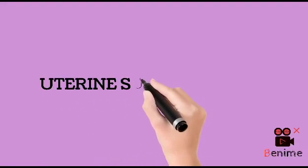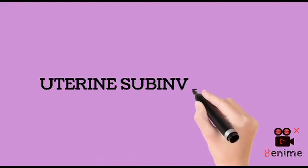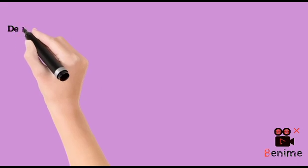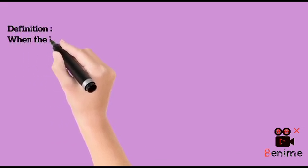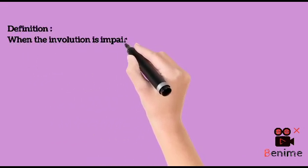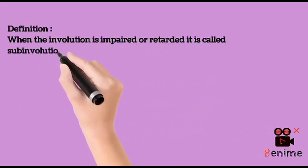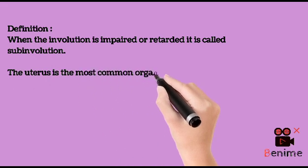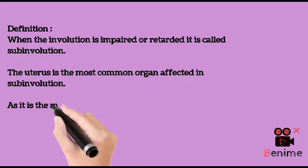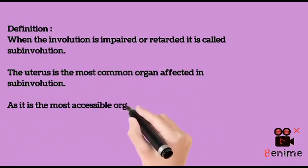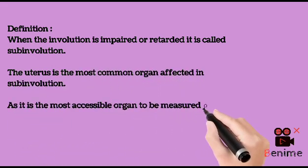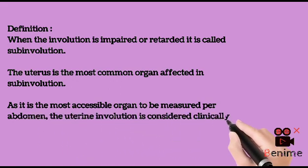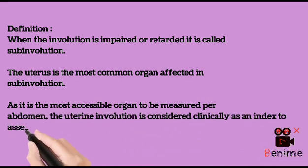Hello everyone. Today we will be discussing uterine subinvolution. When the involution is impaired or retarded, it is called subinvolution. The uterus is the most common organ affected in subinvolution. As it is the most accessible organ to be measured per abdomen, the uterine involution is considered clinically as an index to assess subinvolution.